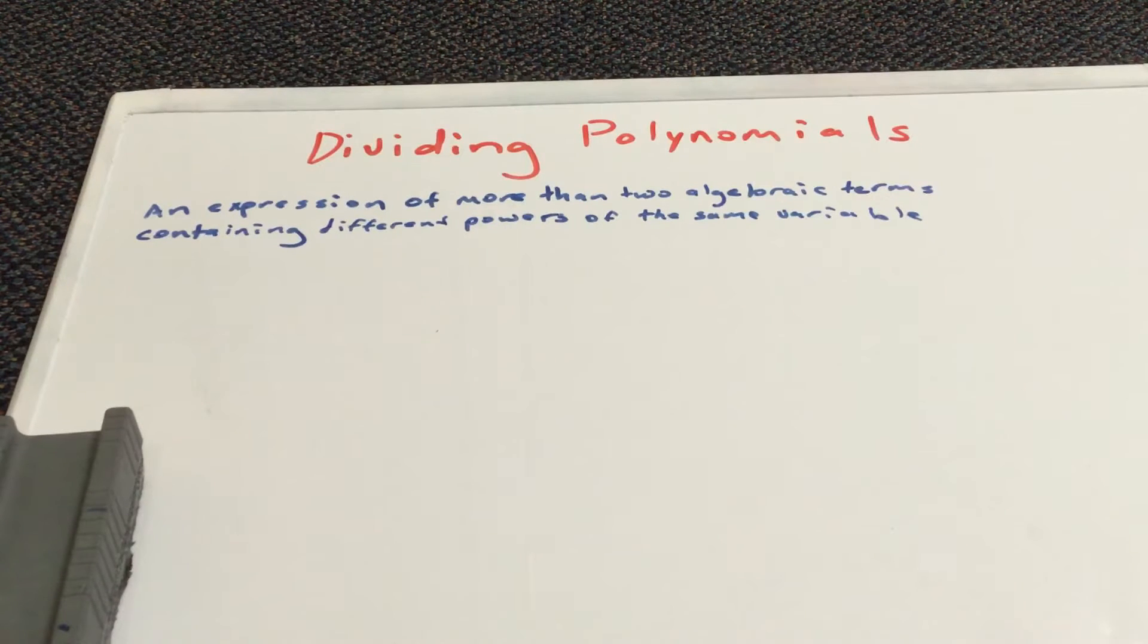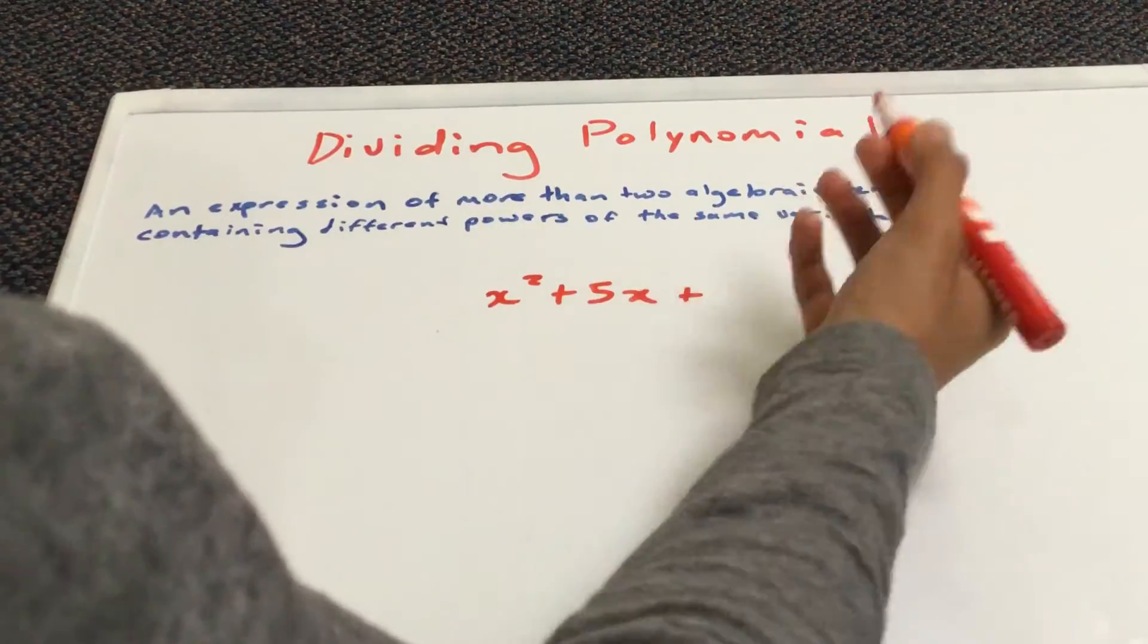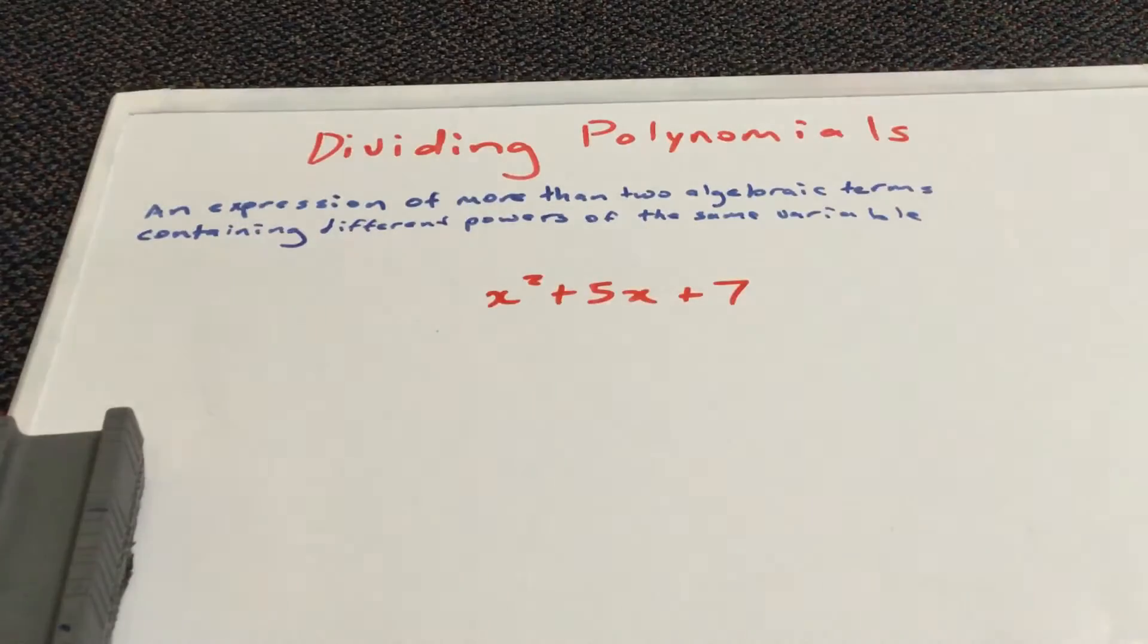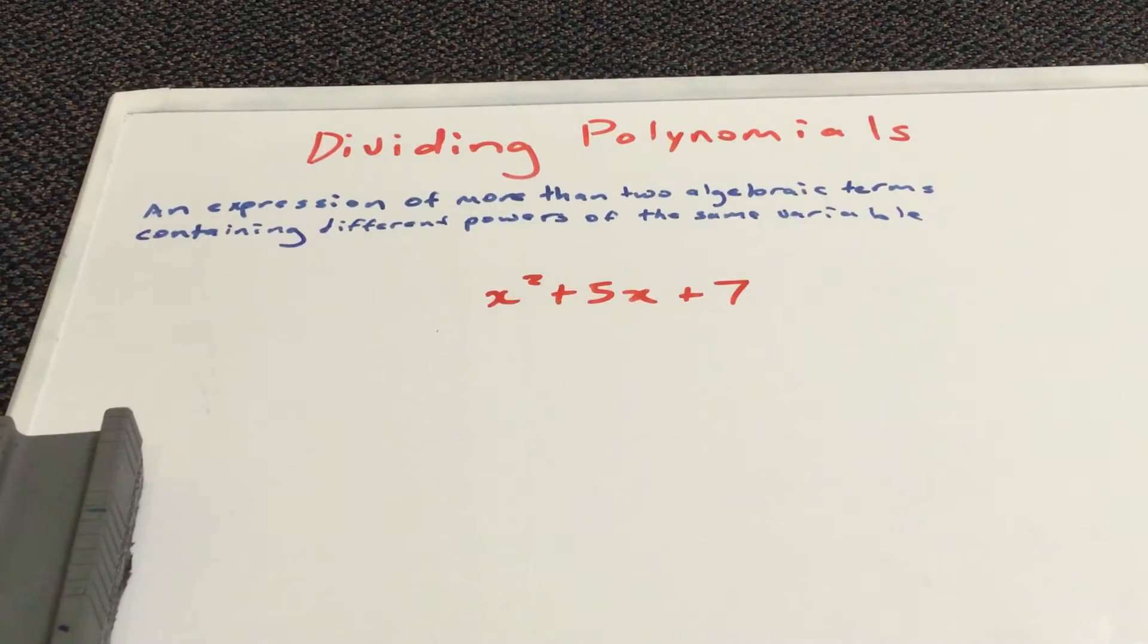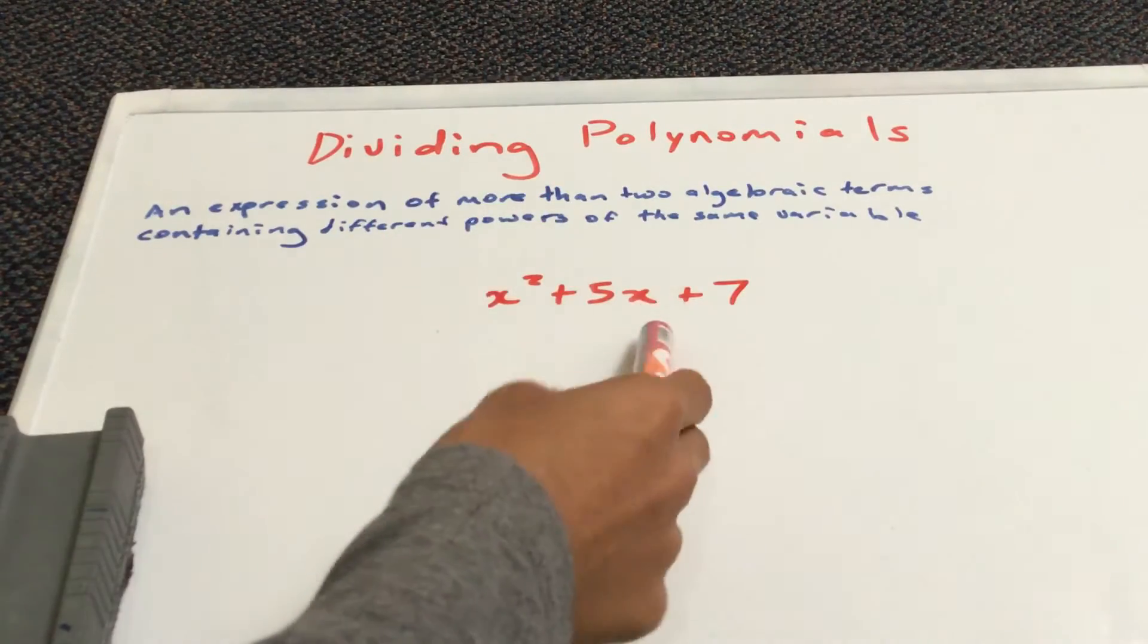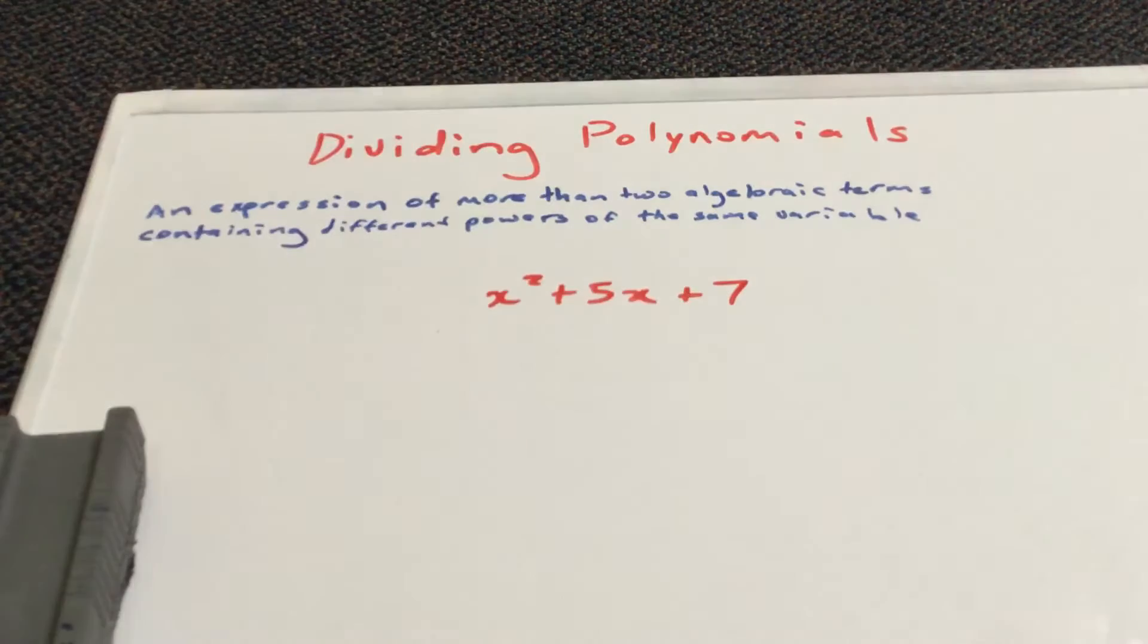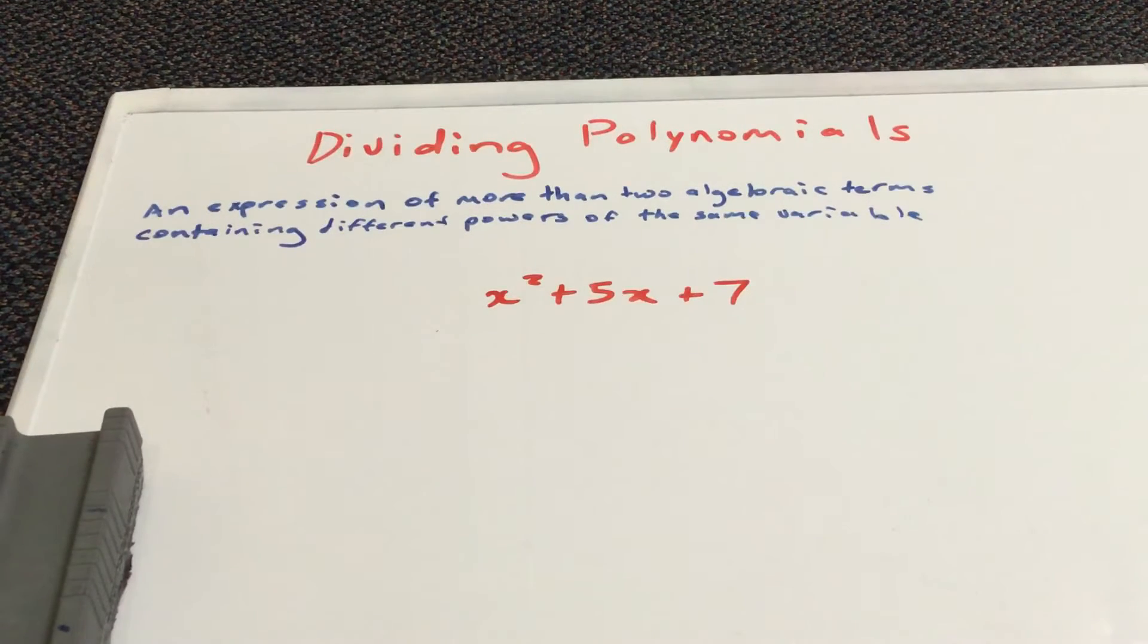An example of a polynomial can be x squared plus 5x plus 7. This is a polynomial because it consists of two algebraic terms, at least, and with different powers. This is to the power of 2, this is to the power of 1.